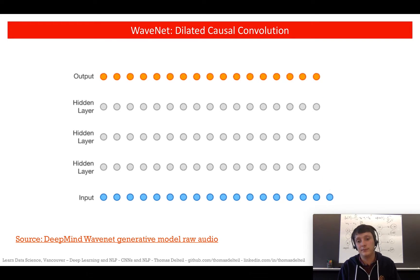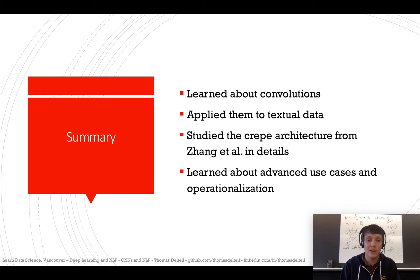In summary, we learned about convolutions and applied them to textual data. We saw that we can use word-level representation or character-level representation, or even byte-level representation. We studied in depth the Crepe architecture from Zhang and LeCun, and we saw how you can implement it using MXNet Gluon and deploy it to the internet. We learned about more advanced use cases where you can mix convolutional neural networks with other types of networks or use more advanced types of convolutions.